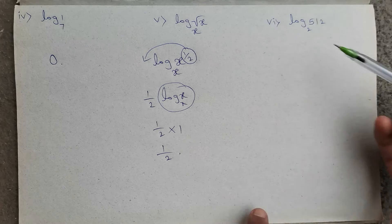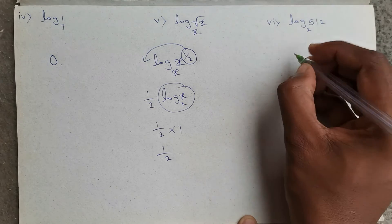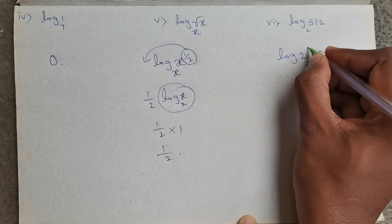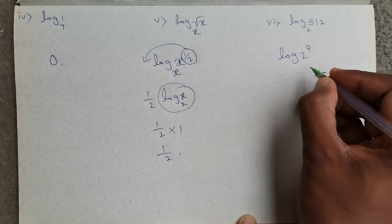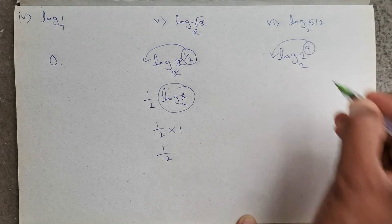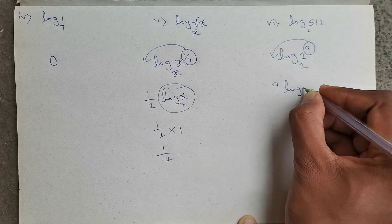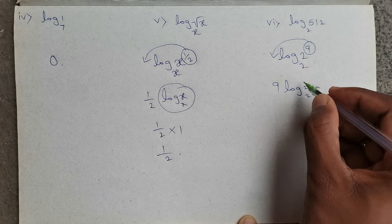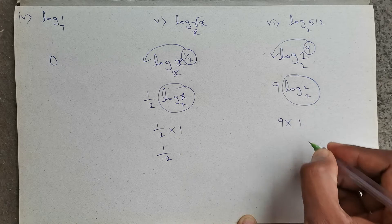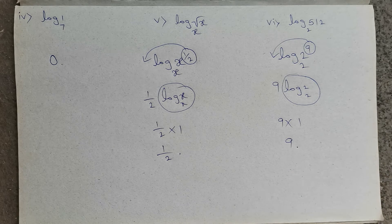Next, log 512 base 2. Log 512 can be written as 2 power 9, base 2. Now this power 9 will go to the front. So 9 into log 2 base 2. Log 2 base 2 value is 1. So 9 into 1, that is nothing but 9.